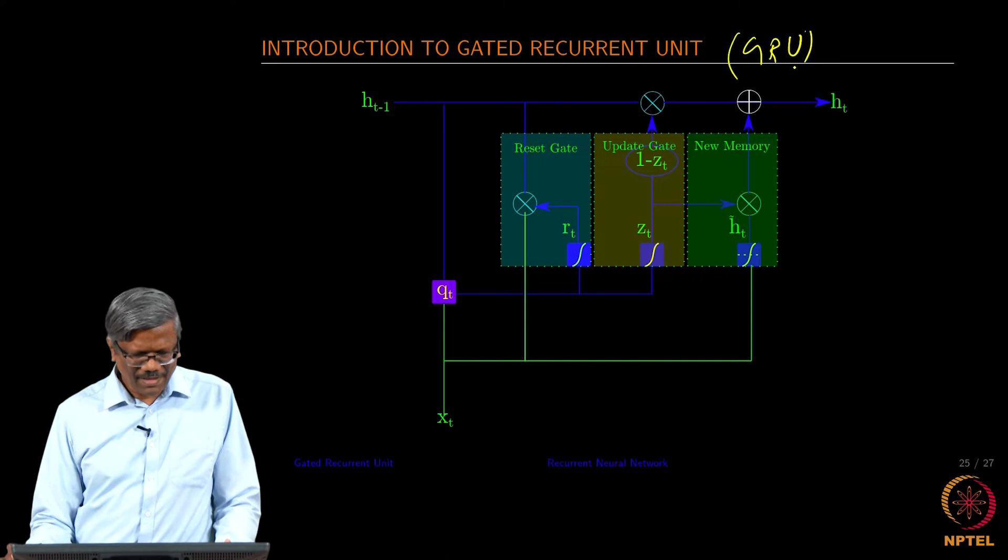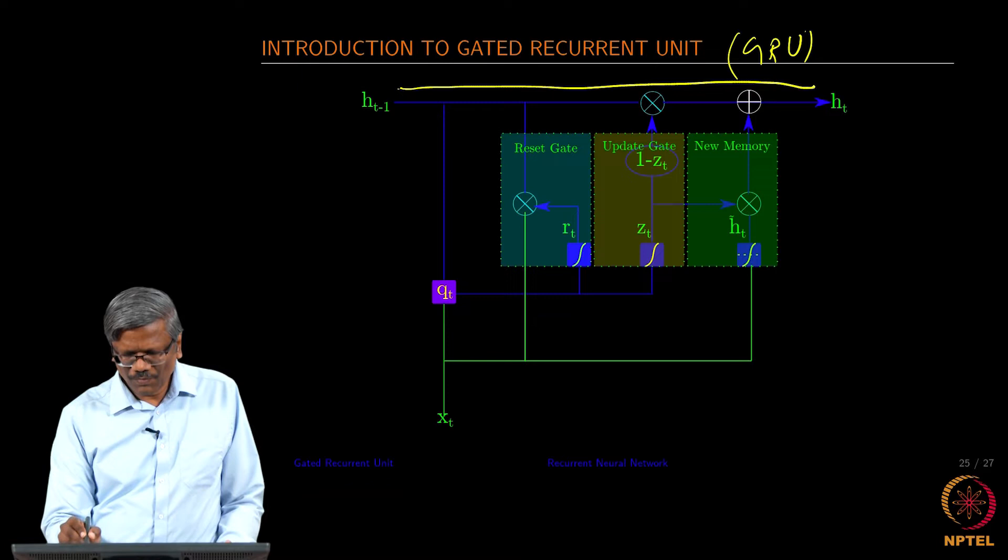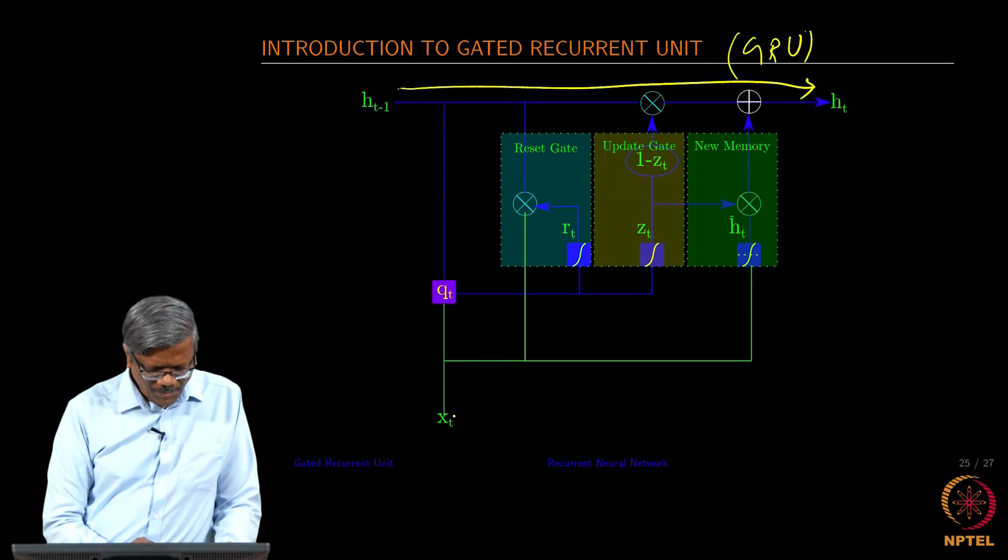In this case we have a line passing through that becomes h_t.